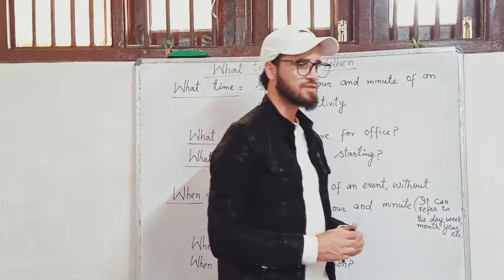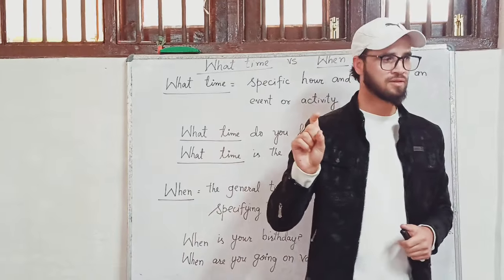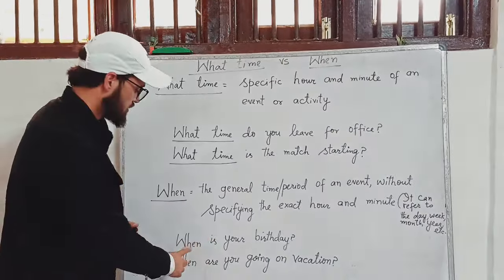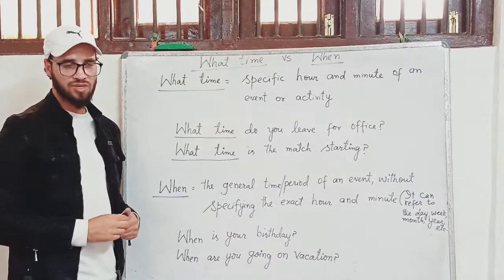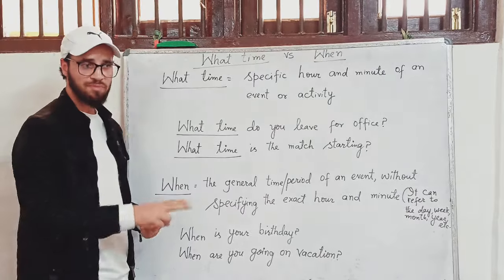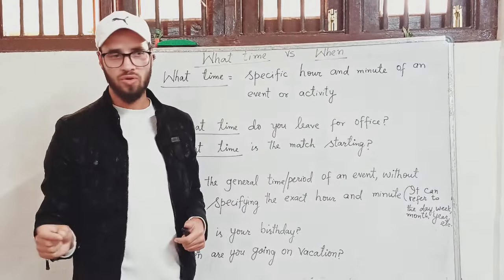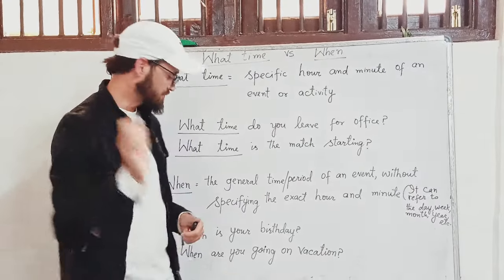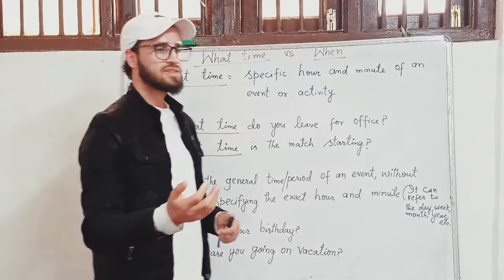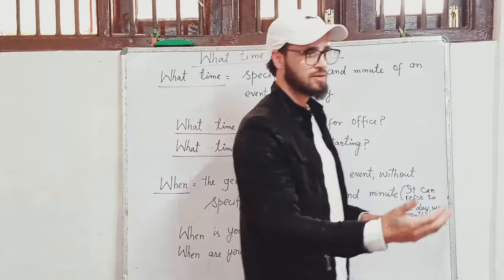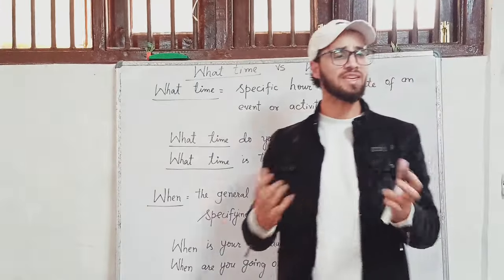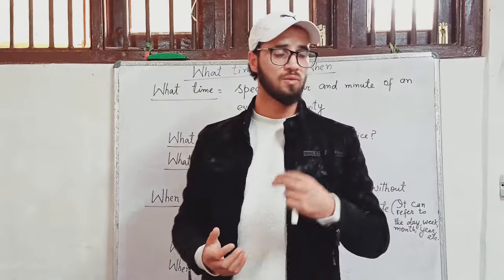For example: When is your birthday? The answer is a day. When are you going on vacation? — note that 'vacation' has two pronunciations: vacation or vacation. You can answer: next week, next month, next year. When do you visit your uncle? You can say: on the weekends.